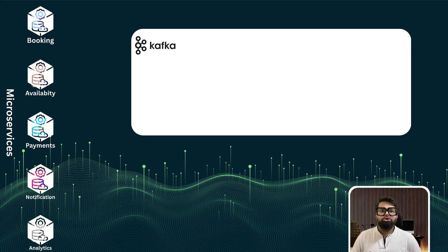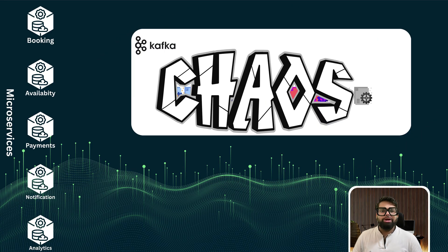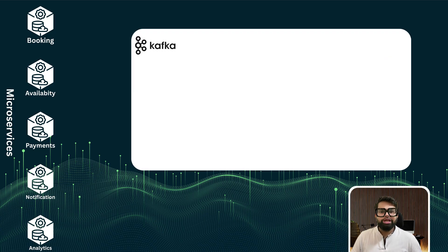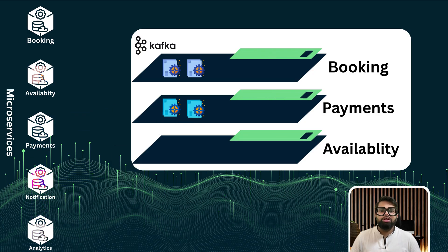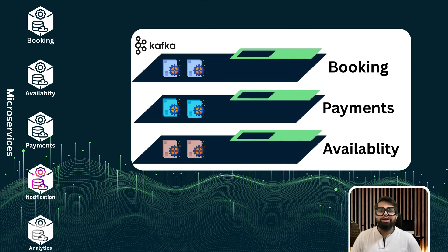But now comes the next question: where do all these events go? We have services producing events for payments, host payouts, guest messages, availability changes, and more. Do all booking events, cancellations, messages, and reviews end up in one massive chaotic stream? No — that would be a total mess. Instead, Kafka uses a concept called topics. Think of topics like labeled channels or dedicated mail slots: one for bookings, one for payments, one for availability updates. This keeps everything clean, organized, and scalable, because each topic can be independently scaled and managed.